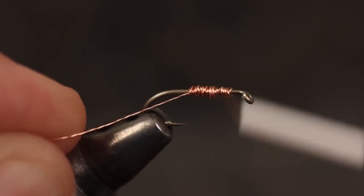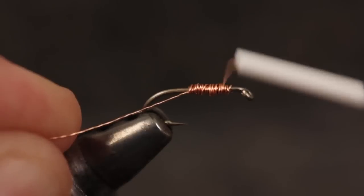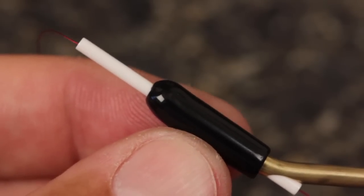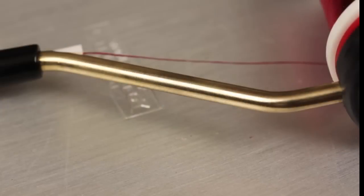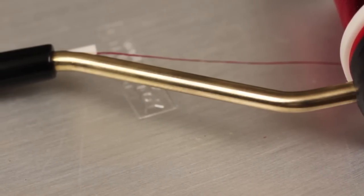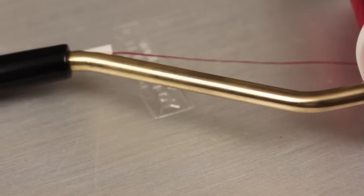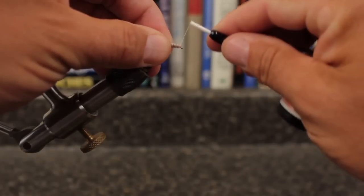The vinyl grip is both comfortable and functional. The solid brass arm will stand up to years of heavy use without bending or denting. The length of the standard bobbin is as perfect as it gets for tying over a wide range of patterns and hook sizes.